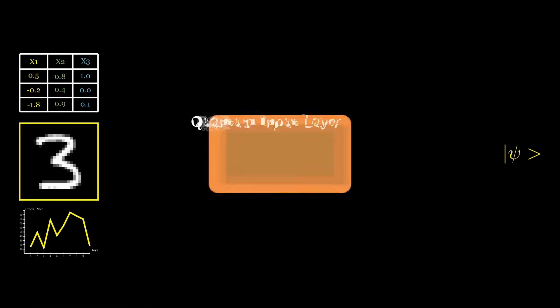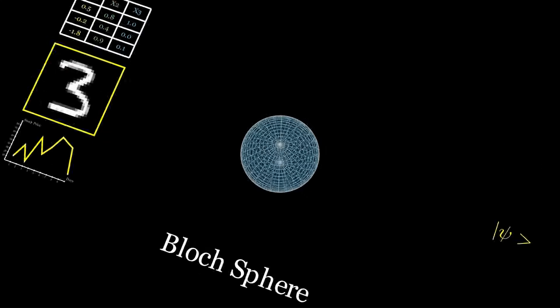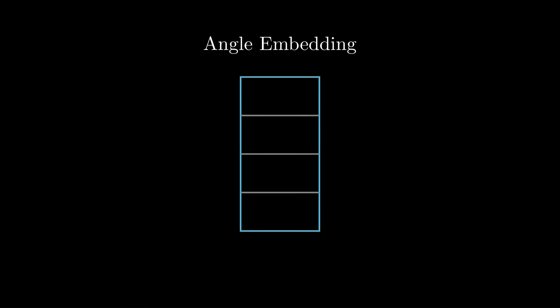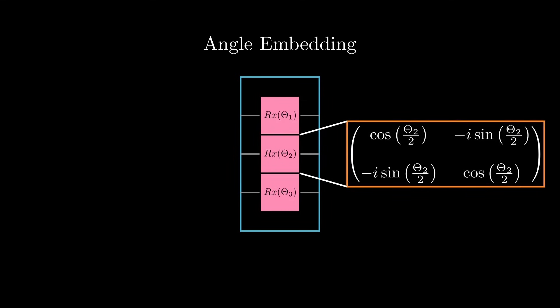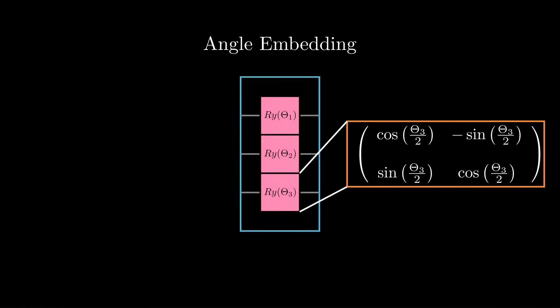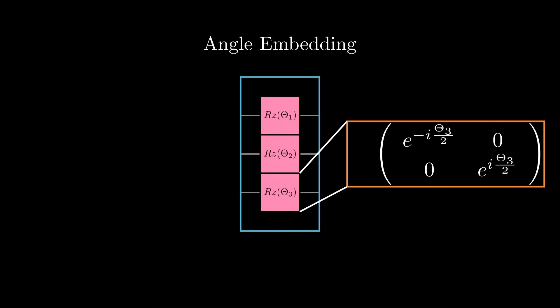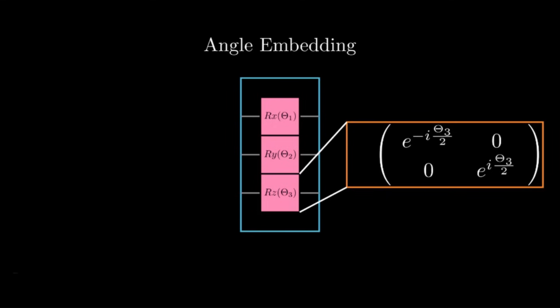We shall explore angle embedding since we can visualize it on a Bloch sphere. For angle embedding demonstration, let's recreate our input layer. These fancy-looking quantum gates can be represented by the following simple matrices. You can have R-Y blocks or R-Z blocks in the input layer too. Generally, the same rotation block is used in a layer; however, for the purpose of demonstration, I am using different rotation gates in the same input layer.